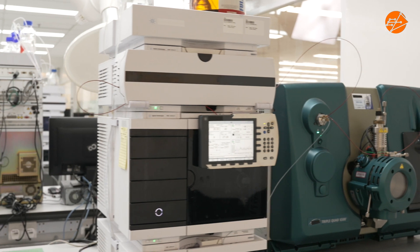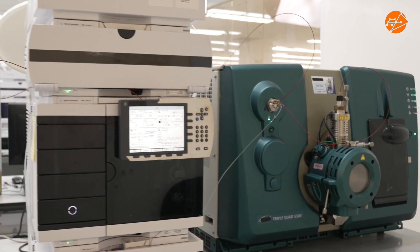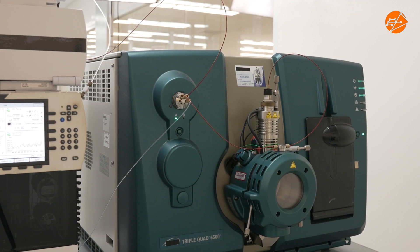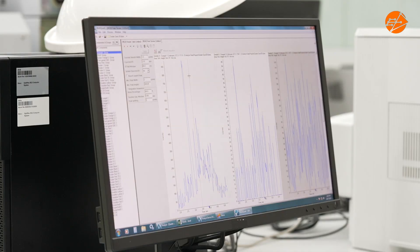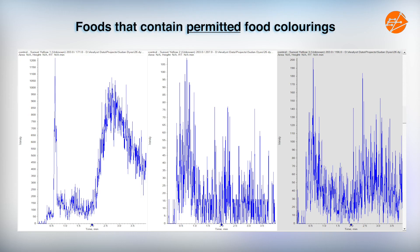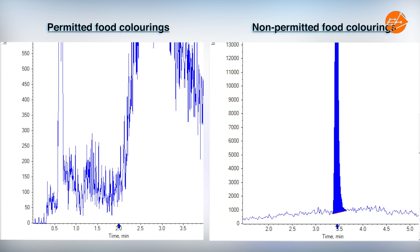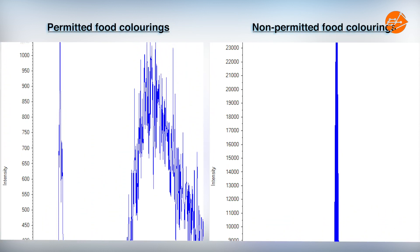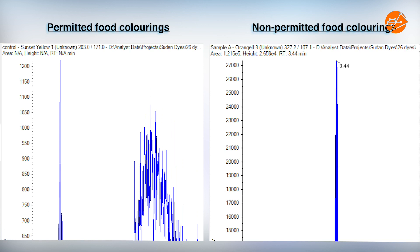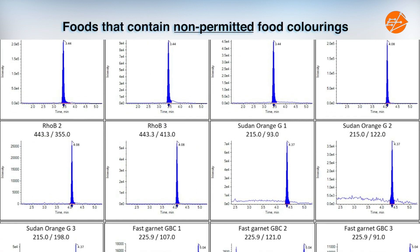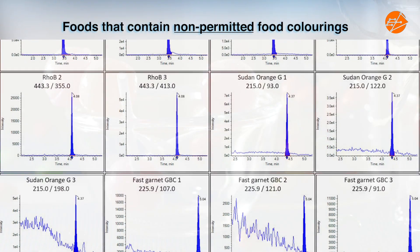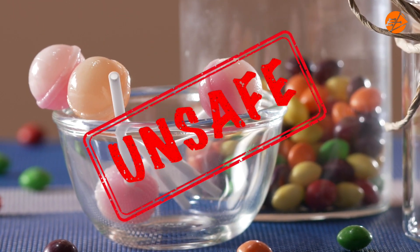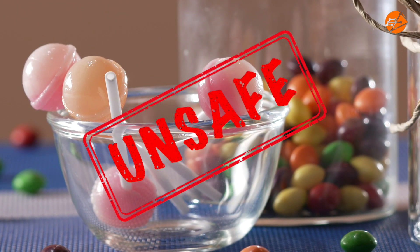Within these machines, the substances in the candies are separated via chromatography. The results from the chromatography will then be displayed on a computer. The chromatography results of the candies are compared to a standard of known non-permitted food colourings. If the food sample contains non-permitted food colouring, the food is considered unsafe for consumption and cannot be sold.